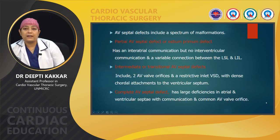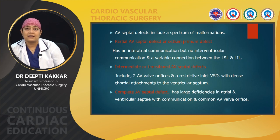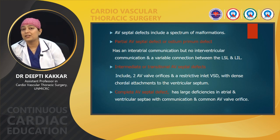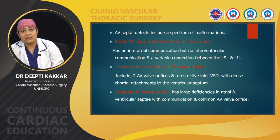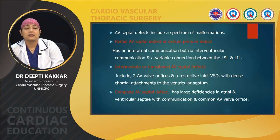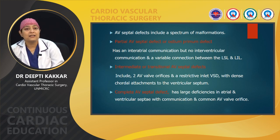AV septal defects include a spectrum of malformations ranging from partial to complete. Partial AV canal defect has only the ostium primum atrial septal defect — there is interatrial communication but no interventricular communication. In intermediate or transitional AV septal defects, there are two separate AV valve orifices and a restrictive inlet VSD with dense caudal attachments to the ventricular septum. In complete AVCD, there are large deficiencies in both the atrial and ventricular components of the septum.